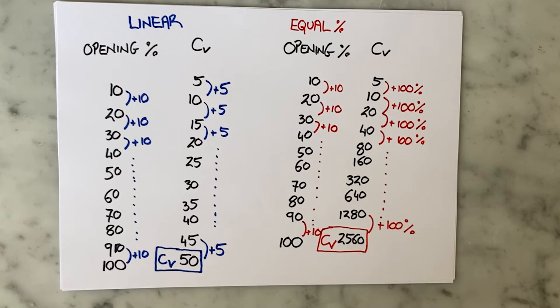So you may think okay, this equal percentage valve that we have here is huge and you proved your point. What about if I wanted a valve with a CV of 50 just like my linear valve but now I wanted to have an equal percentage characteristic? What would that look like?